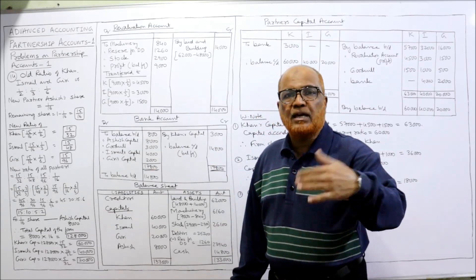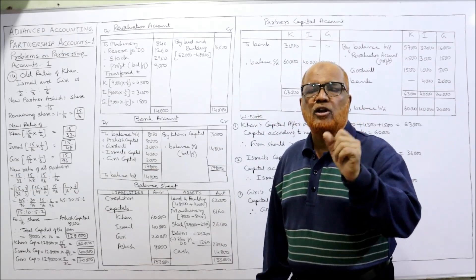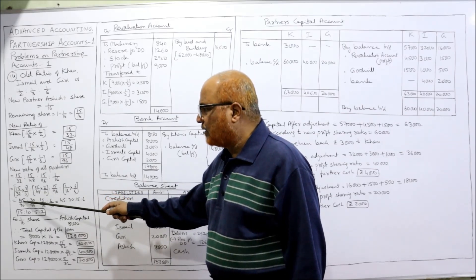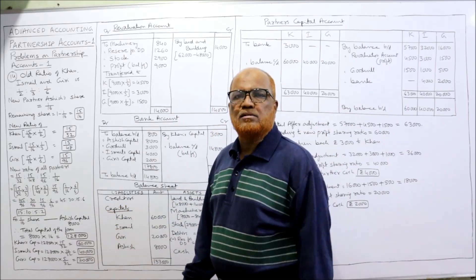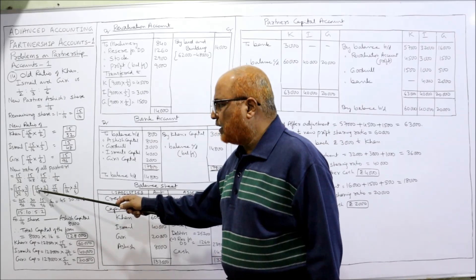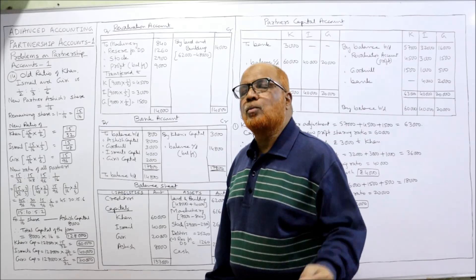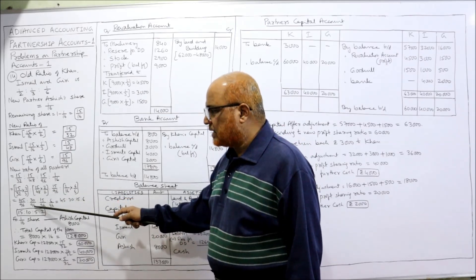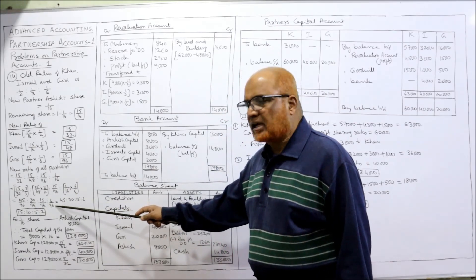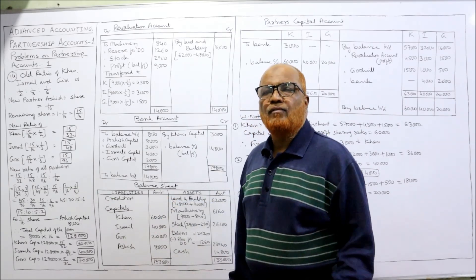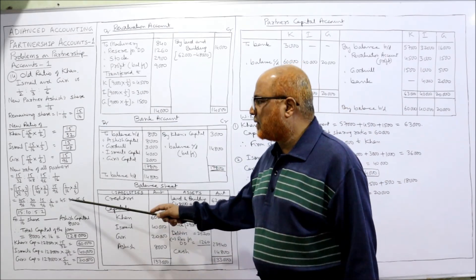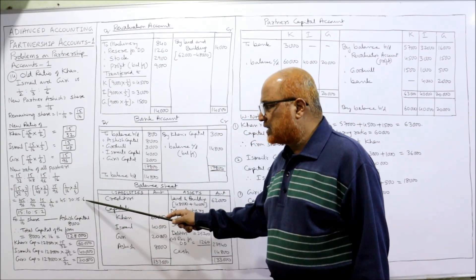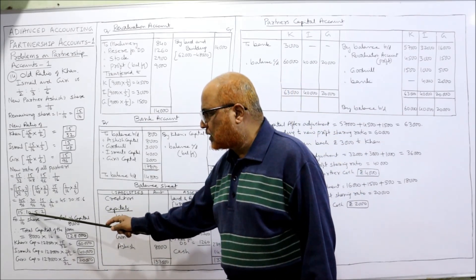To convert: 32 × 3 = 96, so 15/32 becomes 45/96. 48 × 2 = 96, so 15/48 becomes 30/96. 15/96 stays as 15/96. For Ashish: 1/16 × 6 = 6/96. So the ratio is 45 : 30 : 15 : 6. Simplifying by dividing all by 3, we get the new profit sharing ratio as 15 : 10 : 5 : 2.